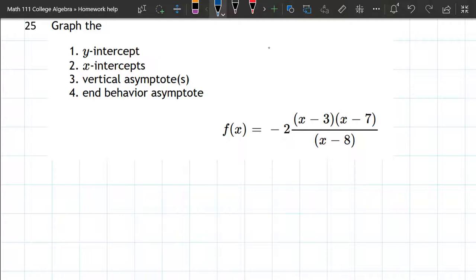So let's start with number one, the y-intercept. You definitely need to know by now, for the y-intercept you're plugging in x equals zero right here. And right here, f of zero equals, we got negative two,